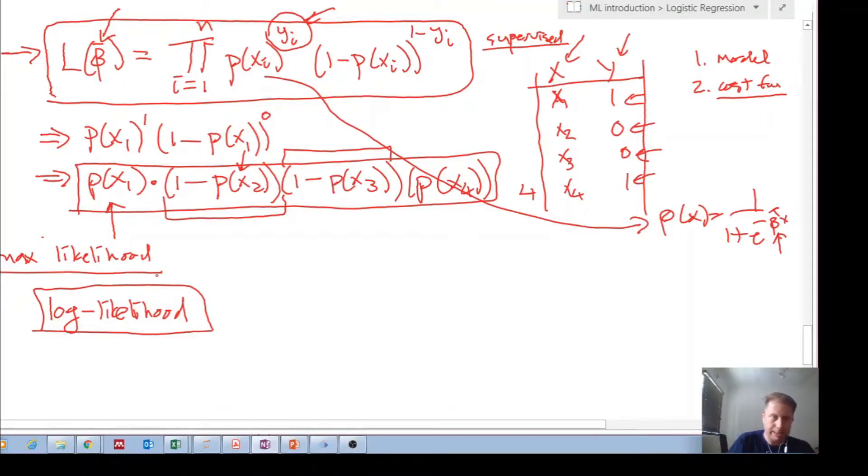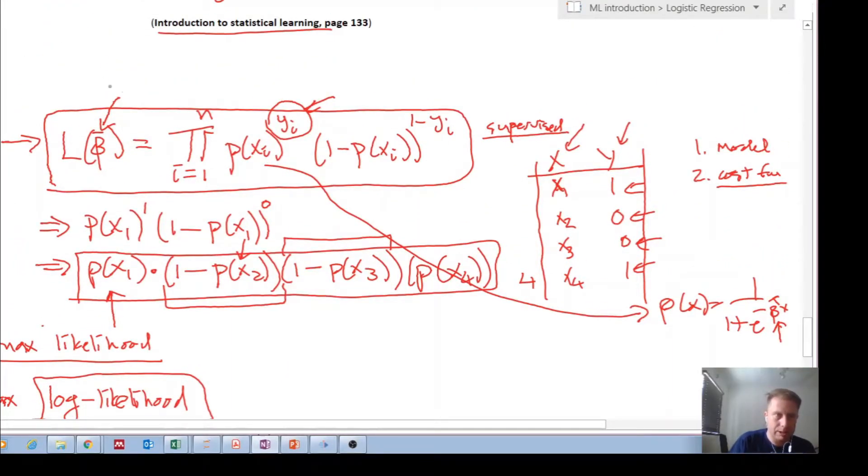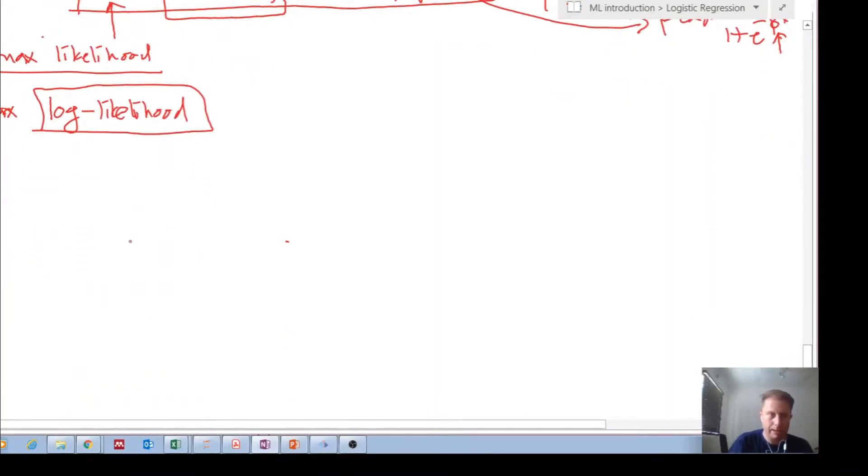Okay, but what most people do is instead of using this function over here with the pi where you multiply these probabilities, what we want to do rather is we want to convert this into a log likelihood and then compute the maximum log likelihood. This really just makes the algebra a lot simpler. So let's convert, we want to convert this equation, this likelihood equation, into a log likelihood.